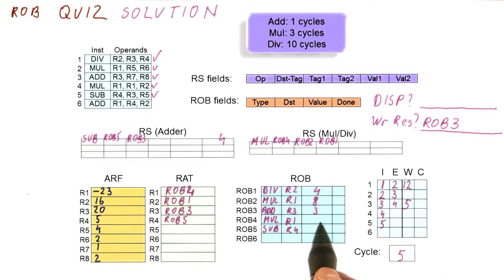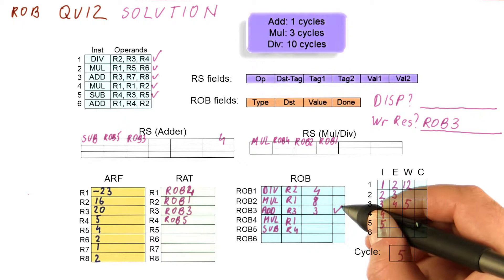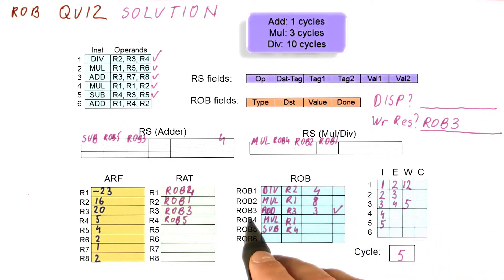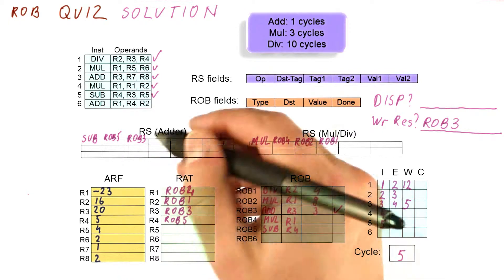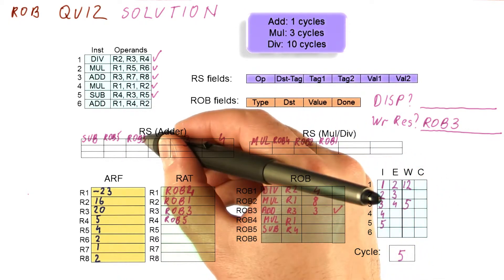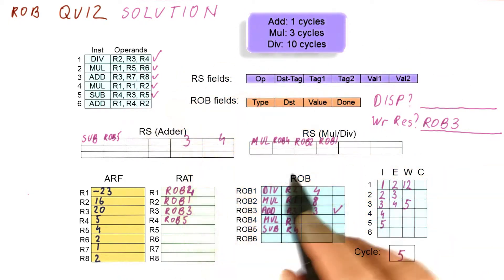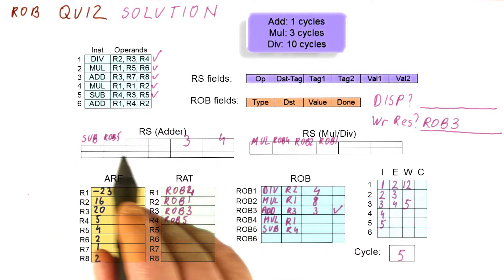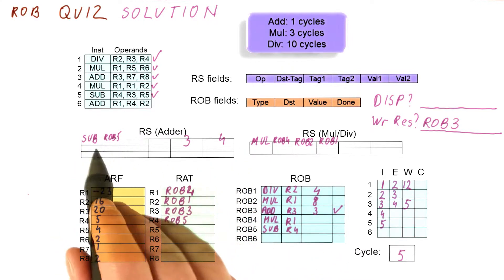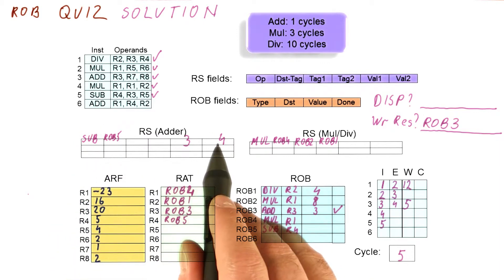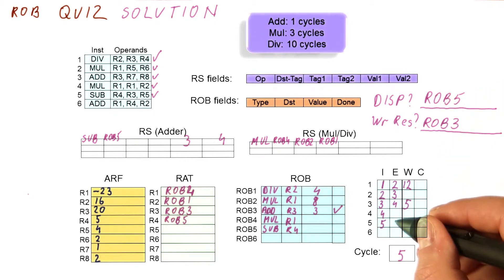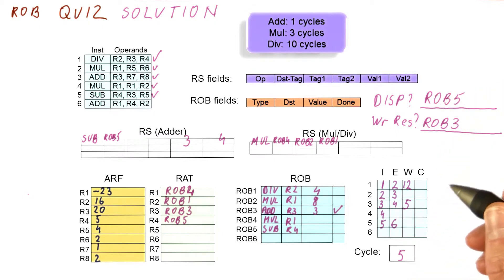As a result of this write result in cycle five, we mark this rob3 entry as done. The value of three is broadcast with the tag of rob3. It gets captured here because this instruction is waiting for rob3. So in fact, because we can dispatch this instruction in the same cycle, in cycle five this subtract does dispatch. So the instruction in rob5 will dispatch, and it will begin executing in cycle six.